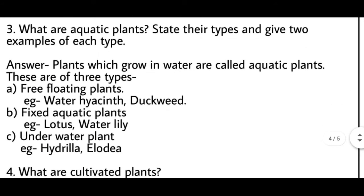Third question: what are aquatic plants? State their types and give two examples of each type. The answer is: plants which grow in water are called aquatic plants. Aise plants jo paani mein paaye jaate hain unko aquatic plants kehte hain. These are of three types.